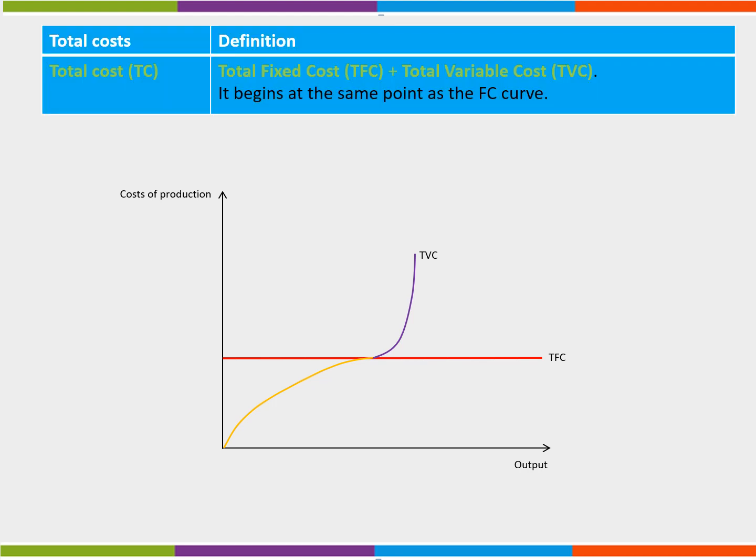Finally we bring in the total cost curve. The total cost curve is a mixture of total fixed costs plus total variable costs. The total cost curve slopes upwards and to the right, bending outwards and then inwards. It begins at the same point as the fixed cost curve and mirrors the total variable cost curve because fixed costs plus variable costs equals total costs.